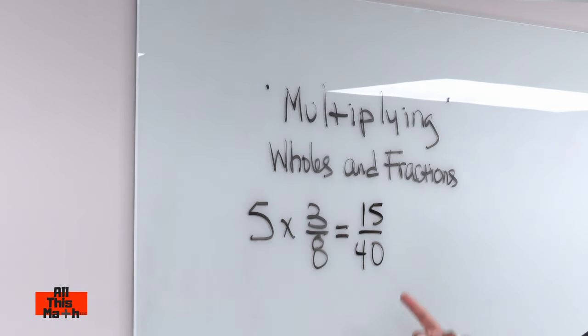You know why they end up with 15 over 40? Because they do five times three and they do five times eight.